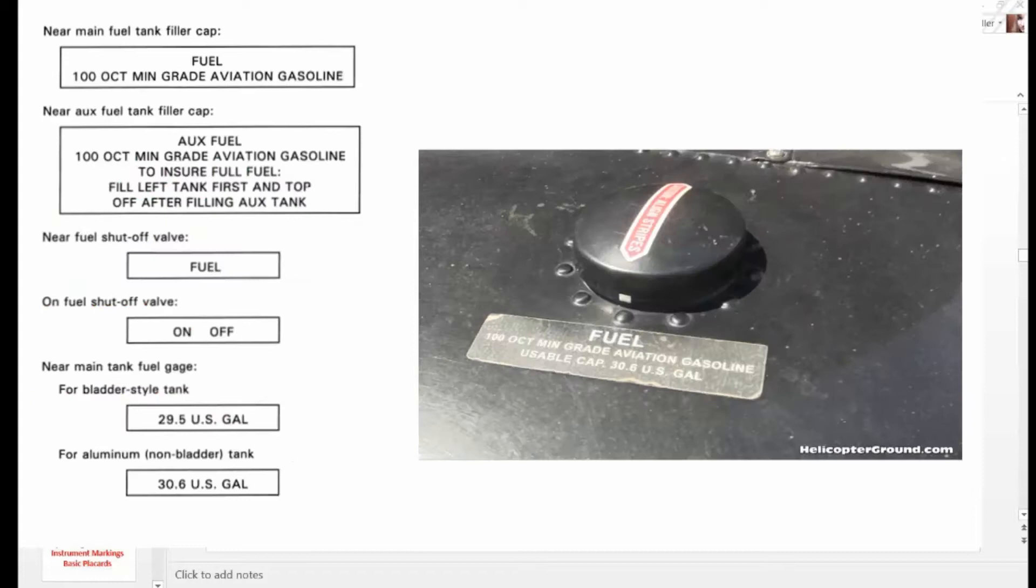I'm just going to show you one page of placards. You have fuel, aux fuel, fuel, on-off. You need to look around inside the aircraft and understand what placards are in your aircraft. They are there and you must adhere to these placards.